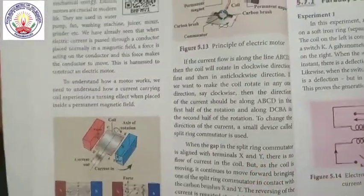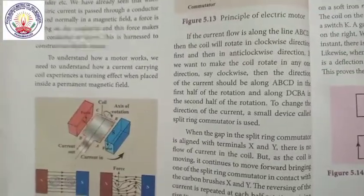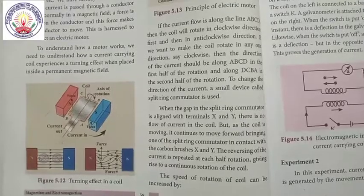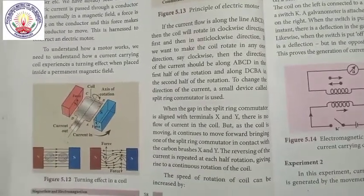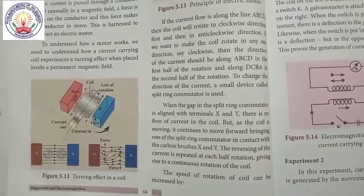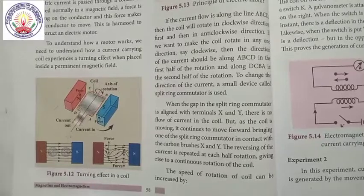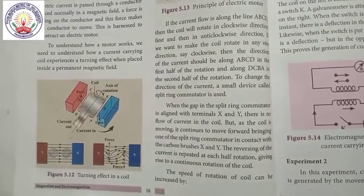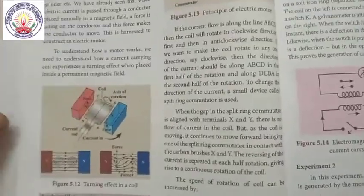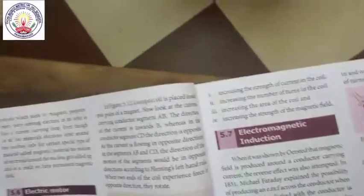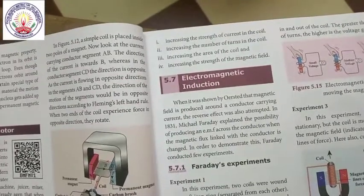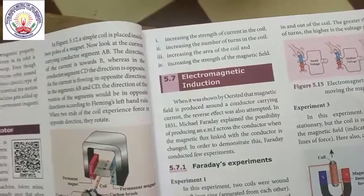To change the direction of the current, a small device called a split-ring commutator is used. When the gap in the split-ring commutator is aligned with the terminals X and Y, there is no flow of current in the coil. As the coil continues to move, the split-ring commutator reverses the current at each half rotation, giving rise to continuous rotation. The speed of rotation can be increased by increasing the current in the coil, the number of turns, the area of the coil, and the strength of the magnetic field.